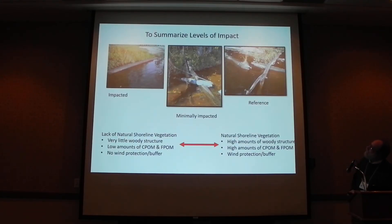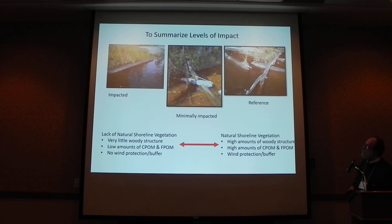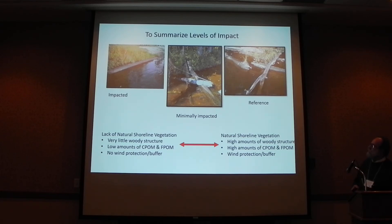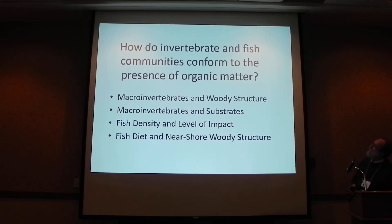To summarize the level of impact: where there was a lack of natural shoreline vegetation, there was very little woody structure, low amounts of coarse and fine particulate organic matter, and no wind protection or buffer. Compared to natural shoreline vegetation, there were high amounts of woody structure, high amounts of coarse and fine particulate organic matter, and wind protection and buffer. So how do the invertebrate and fish communities then conform to the presence of this organic matter?